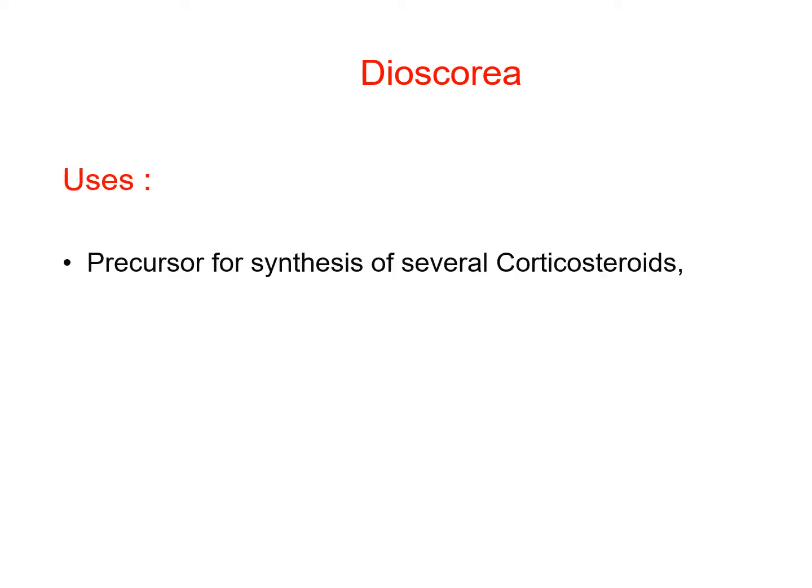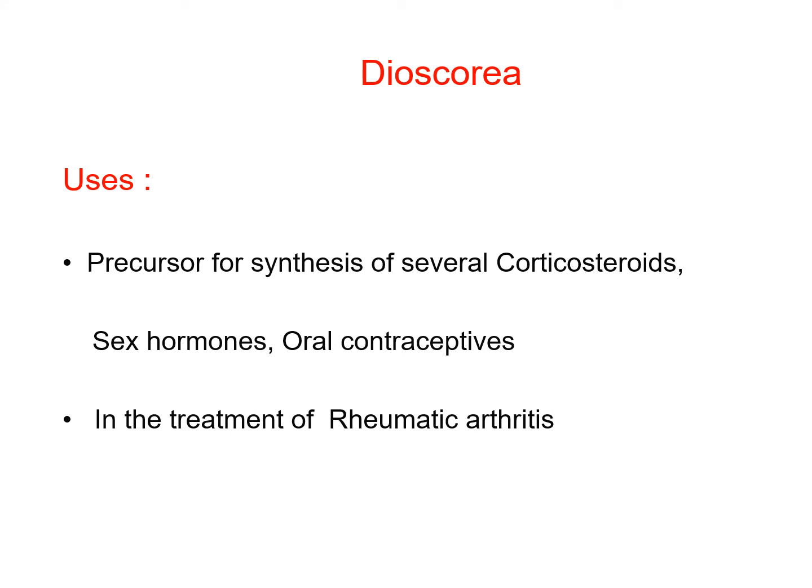Dioscoria is used as a precursor for synthesis of several corticosteroids, sex hormones, and oral contraceptives, and in the treatment of rheumatic arthritis.